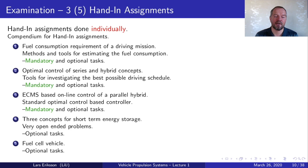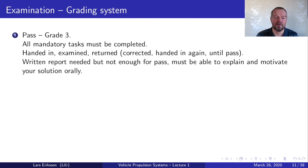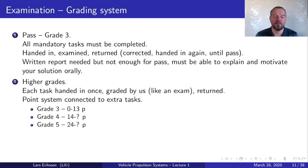To get a pass on the course you have to complete all mandatory tasks, which gives you grade 3. Optional tasks give you an opportunity for higher grades. Pass gives grade 3, and you must complete all mandatory tasks. You hand them in, they are examined, and if you have made mistakes you are required to make corrections and hand them in again, iterating until you have passed all hand-ins. For higher grades, there is a group of extra tasks given points as shown in the compendium.